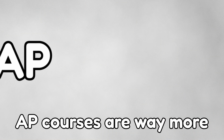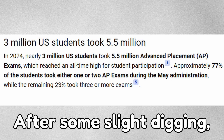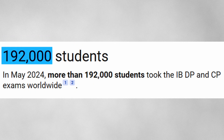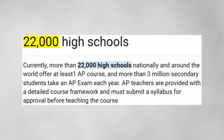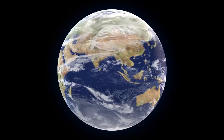To start off, AP courses are way more popular than IB courses. After some slight digging, nearly 3 million students took an AP exam in 2024, while only 200,000 students took an IB exam. AP courses are clearly more popular, since in the US over 22,000 schools offer AP courses, while only less than 1,000 offer IB ones. However, this makes sense considering that IB courses are more global.